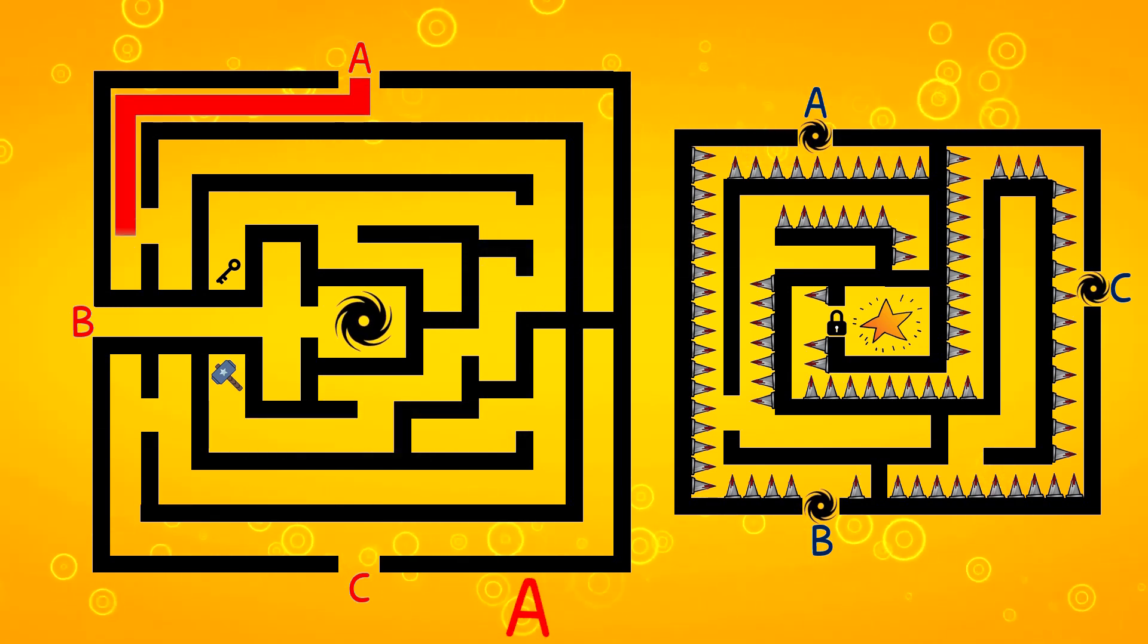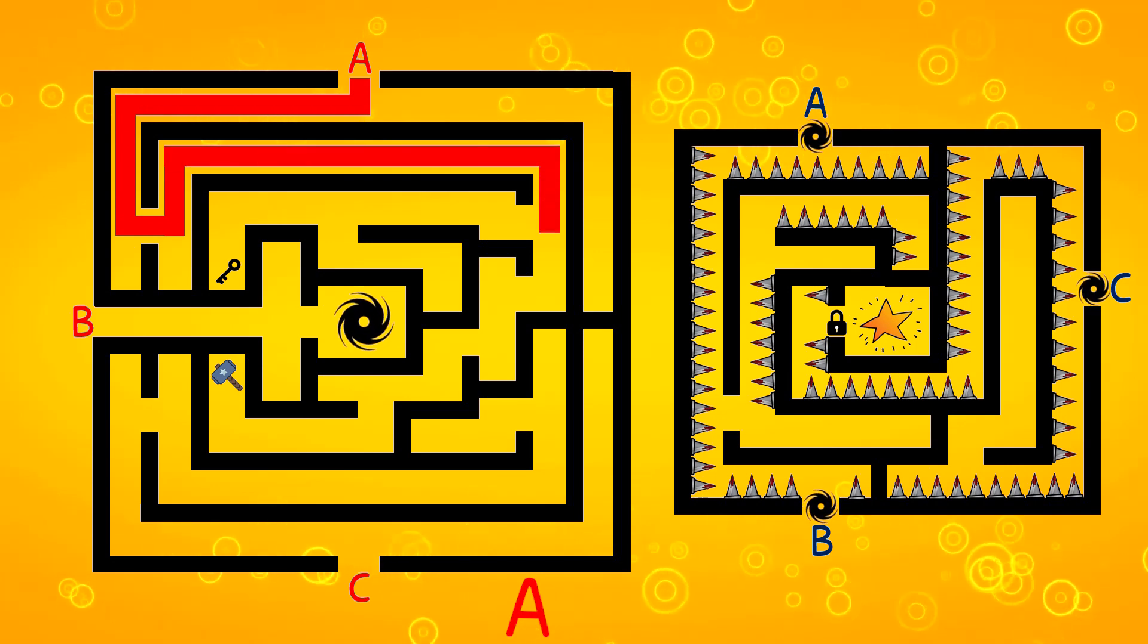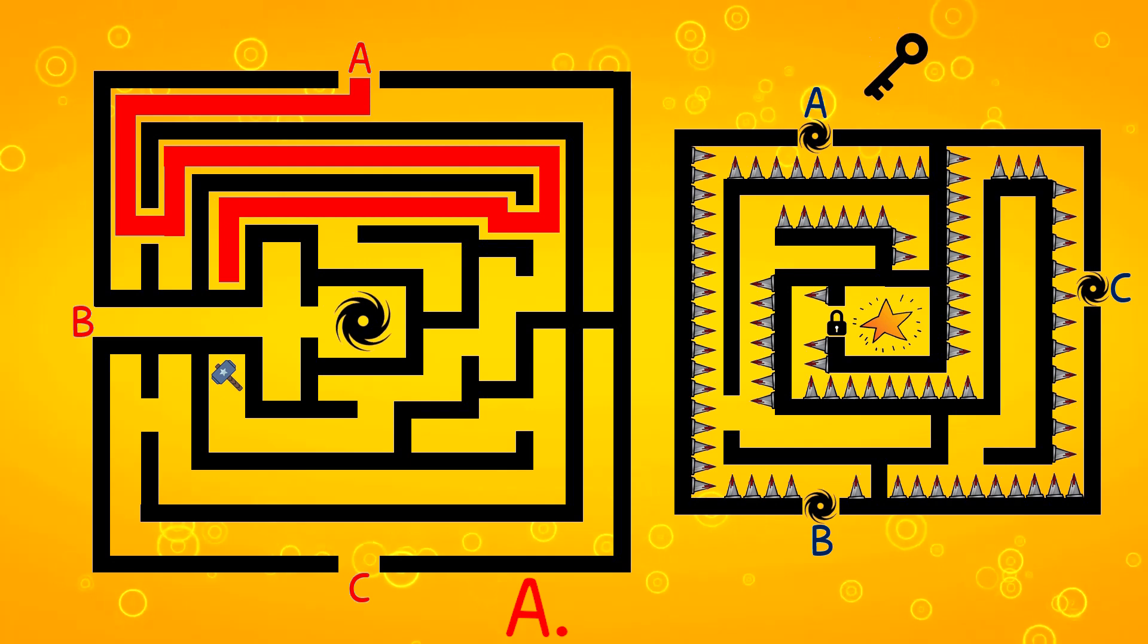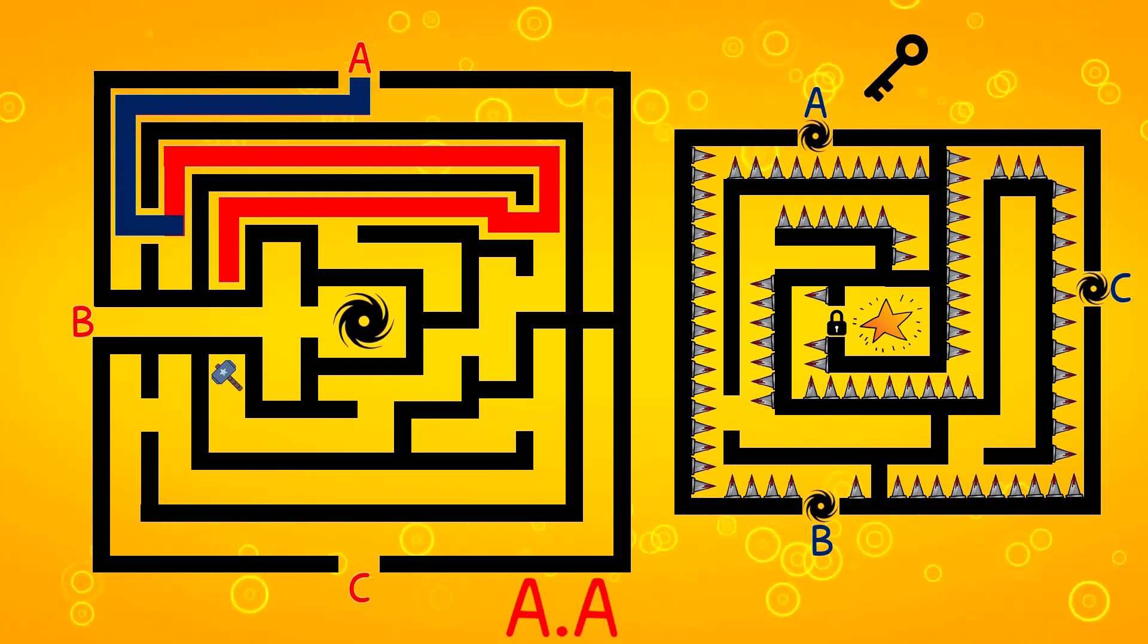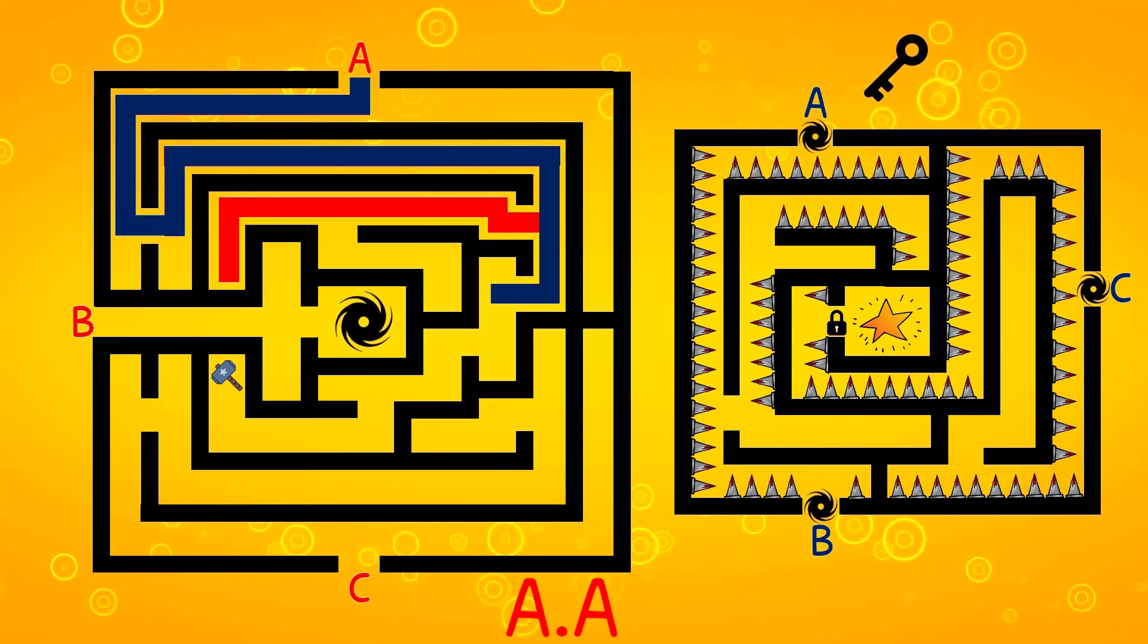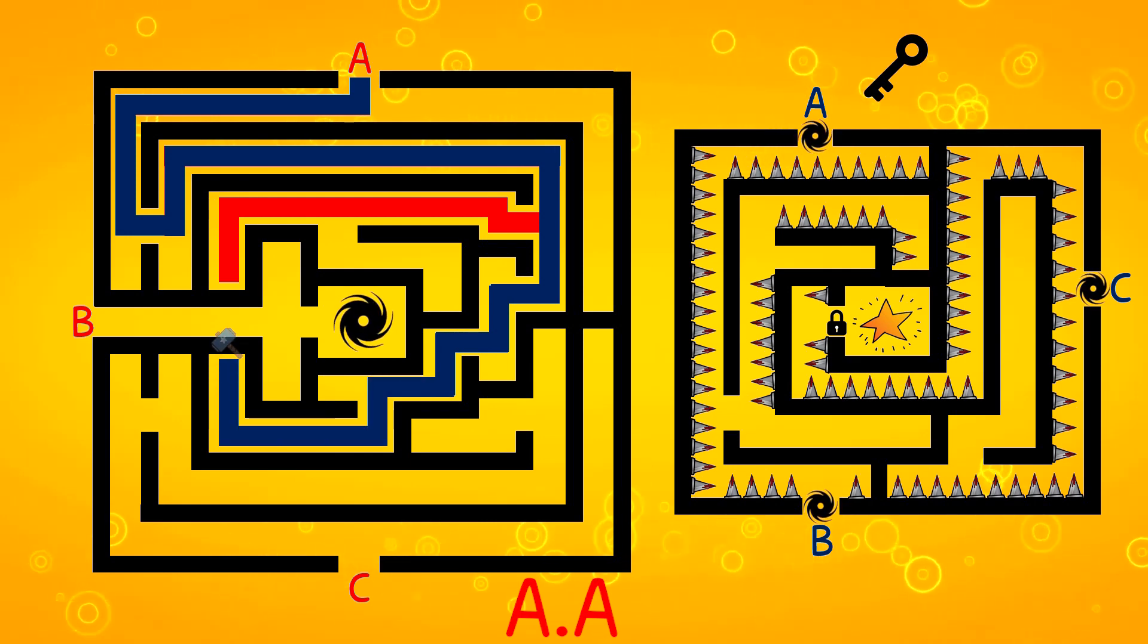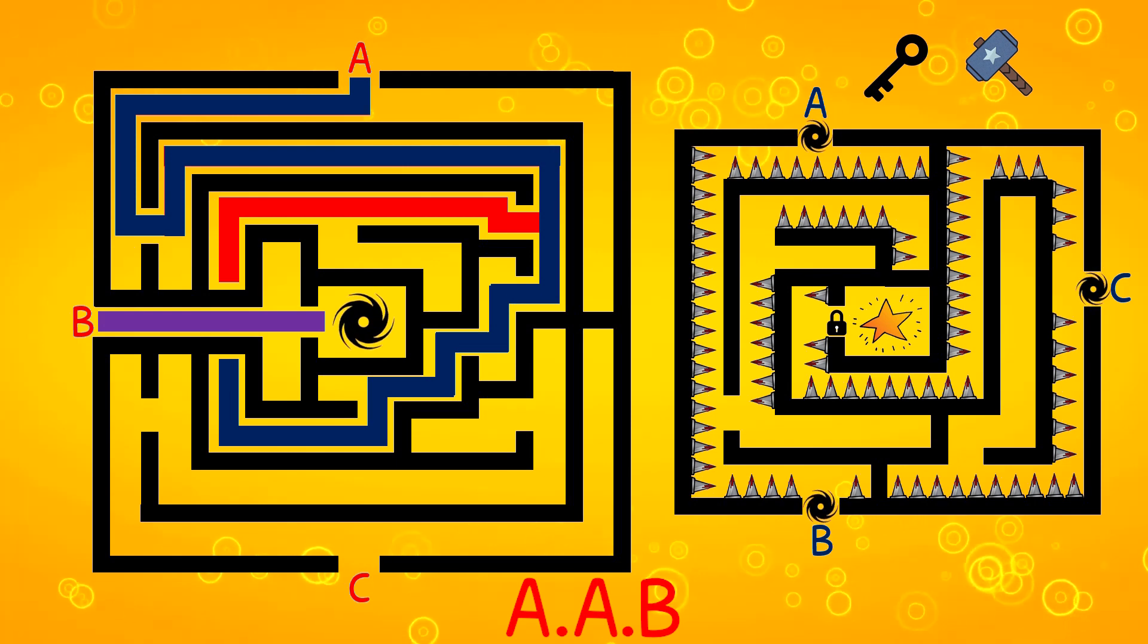Before entering the portal, you need a key and an iron hammer, both of which are located in path A. Therefore, you have to enter path A twice. After that, you enter the portal through path B.